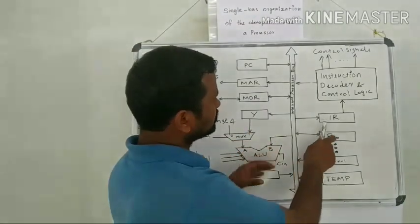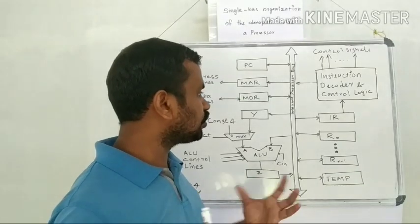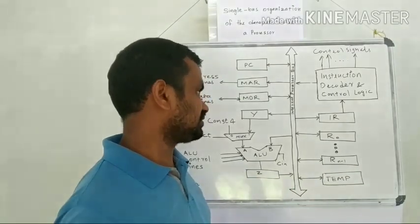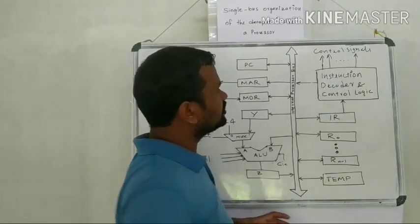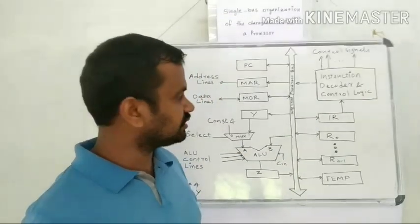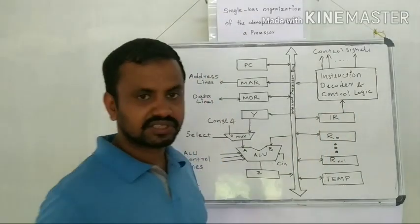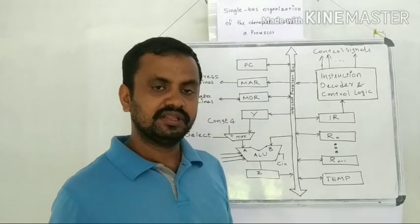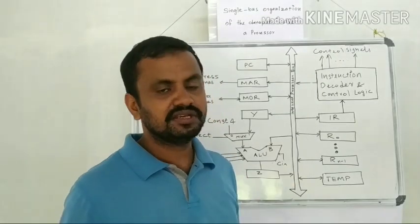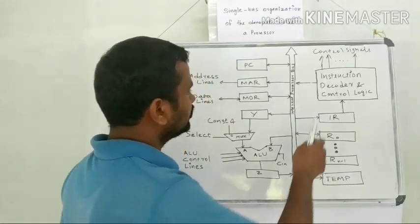Then another register is the instruction register or IR. This register is used for storing the fetched instruction. Then this is the instruction decode and control logic. This will read the content of the instruction register and decode it, then identify which instruction is there. Then based on that, it will generate the required control sequence or control signals for executing that instruction.